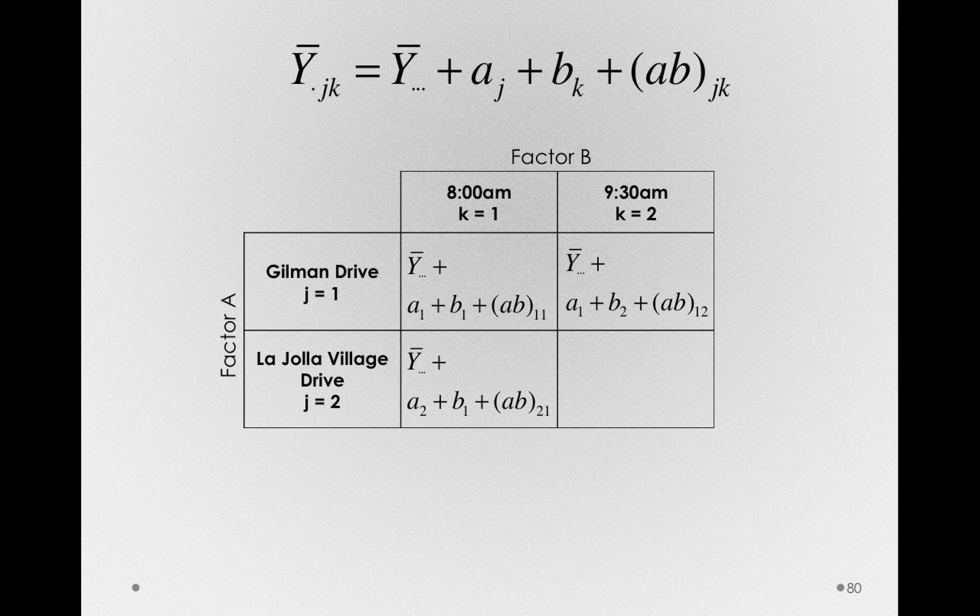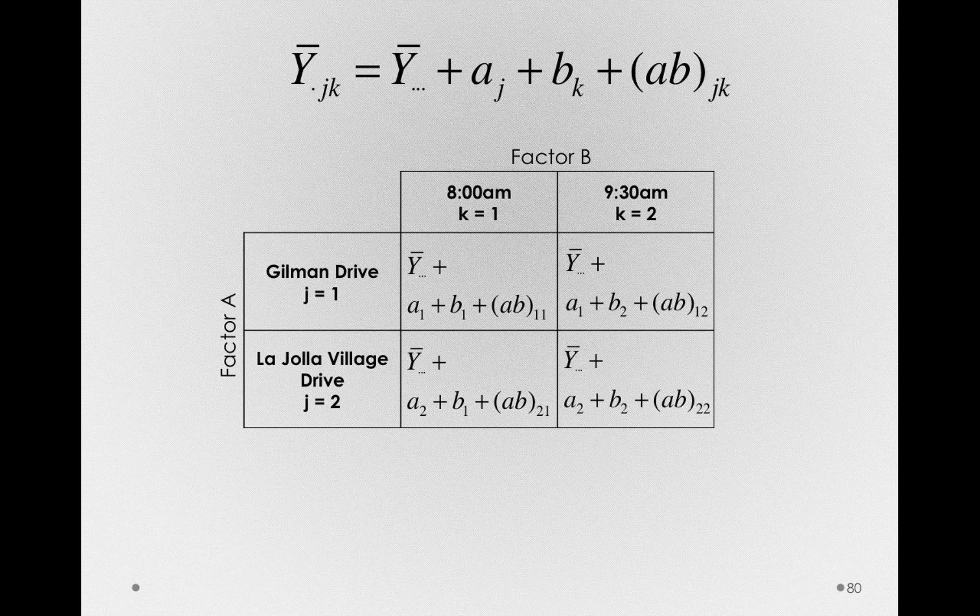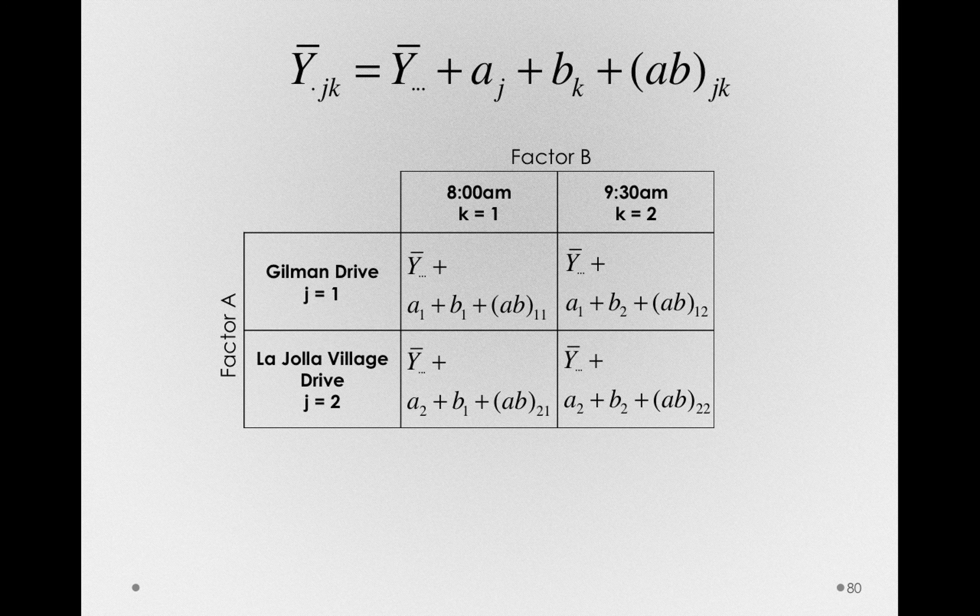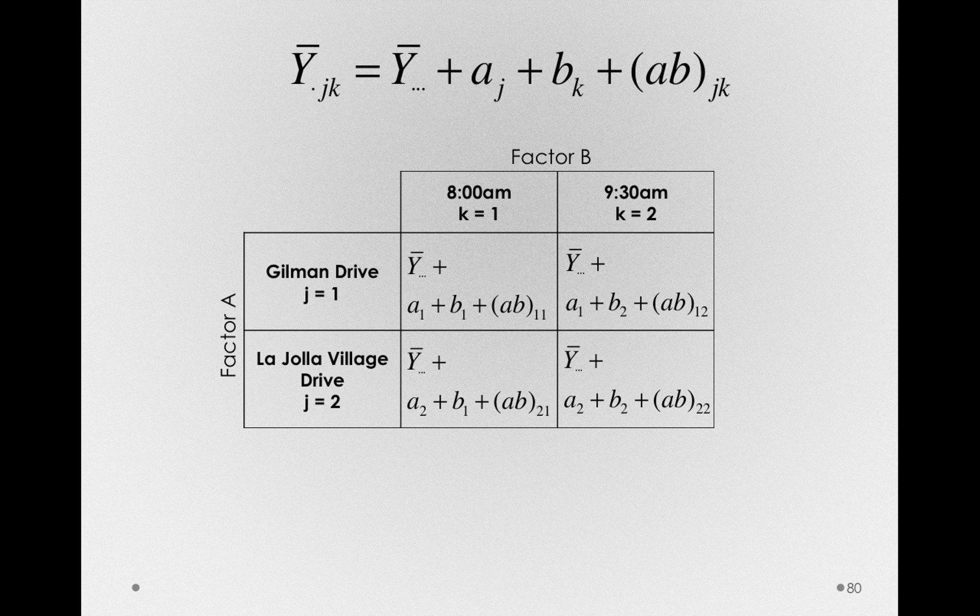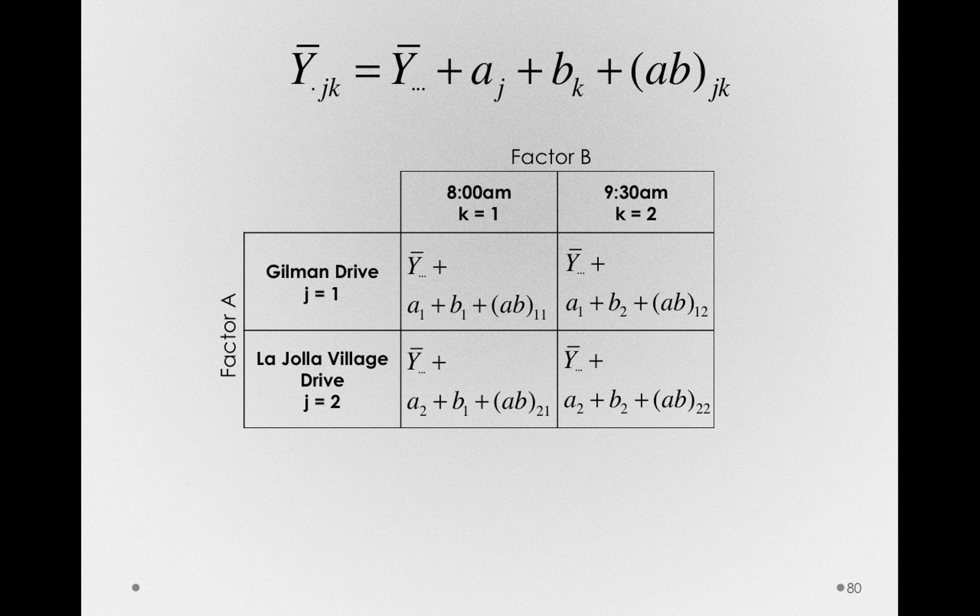Finally, La Jolla Village Drive at 9:30 a.m. will be y bar dot dot dot plus a_2, the same a_2 we found before for La Jolla Village Drive, plus b_2, the same b_2 we used at Gilman Drive at 9:30, plus a final ab term, ab_22.